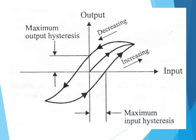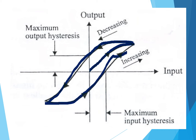Starting from 0 on the scale and going to the maximum value, then reducing to the minimum value, and increasing again — the instrument does not trace the same path. The path traced when decreasing and the path traced when increasing are not the same; there is a difference in values. This difference in values gives what is known as hysteresis.